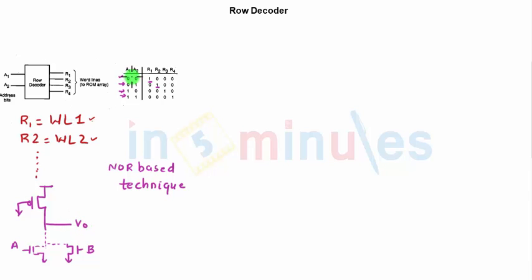Here we have two inputs A1 and A2, and we have its complement inputs as well, which are A1 bar and A2 bar.